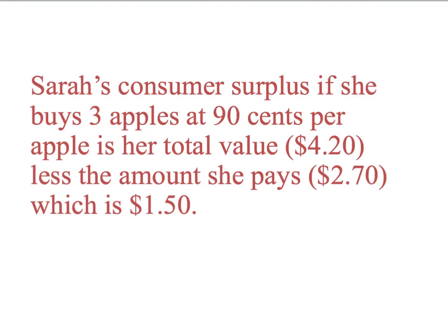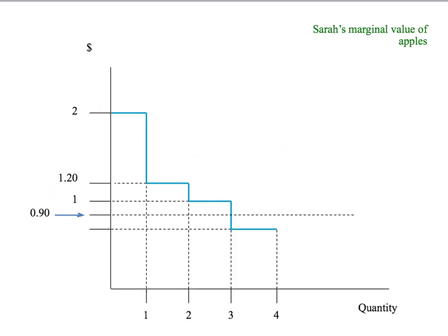We define Sarah's gains from trade, or her consumer surplus, as the difference between the benefit she receives — which is the area under her marginal value curve, her total value — and the amount she pays. For three apples, the area under her marginal value curve is $4.20, which gives her total value from three apples. Her consumer surplus is that total value less the amount she pays. If apples are 90 cents each and she buys three apples, she pays $2.70. So her consumer surplus is $4.20 minus $2.70, which is $1.50.